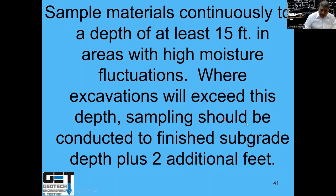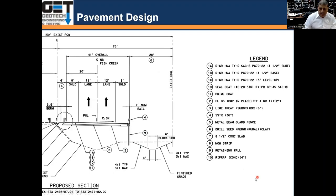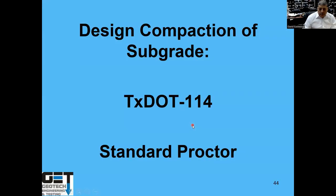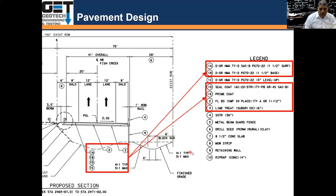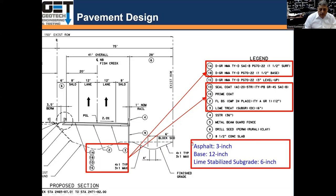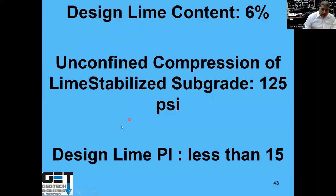I don't agree with boring only two feet below final depth — you really need to go at least 15 feet below the final depth. The typical pavement design on this project was 3 inches of asphalt, 12 inches of base (crushed limestone or crushed concrete), lime stabilized to a depth of 6 inches. The lime stabilization should have been 6% lime in the subgrade with unconfined compression of 125 PSI on the lime stabilized subgrade. After lime stabilization, the PI of that soil should be less than 15.